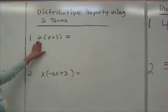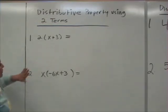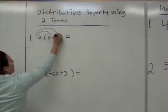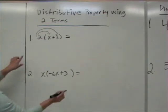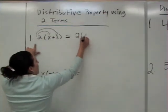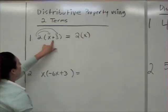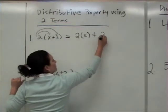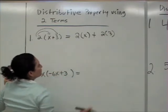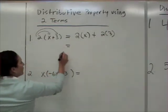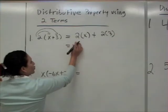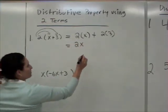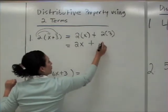Now we have 2 that multiplies x plus 3. So 2 is going to multiply x, and 2 is going to multiply 3. Now we have 2 times x plus 2 times 3. We can simplify this: 2 times x would be 2x, plus 2 times 3 would be 6.